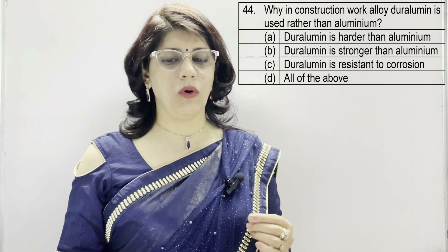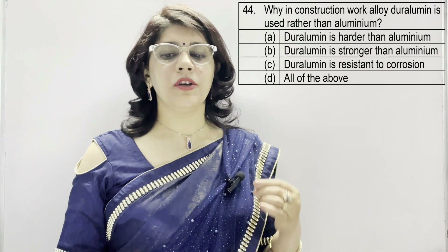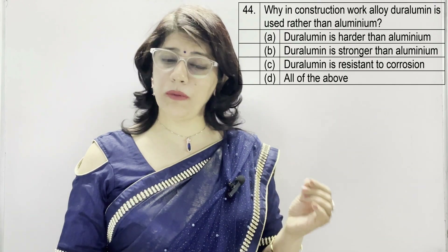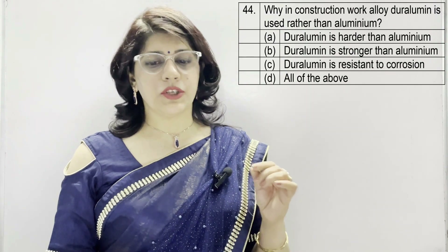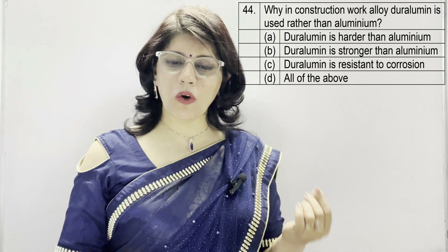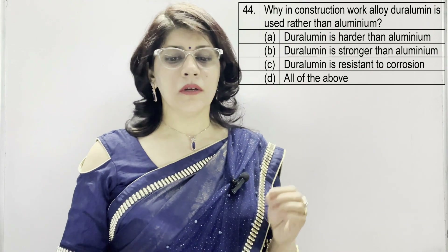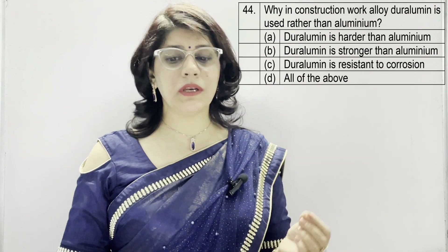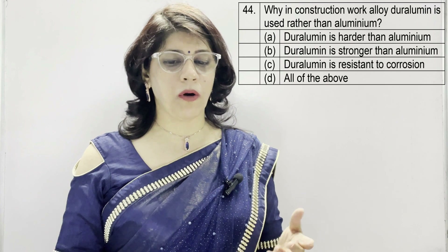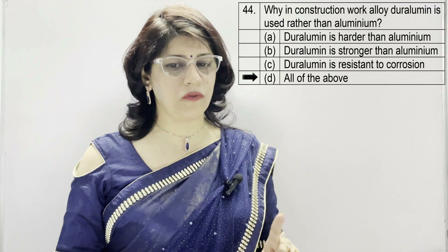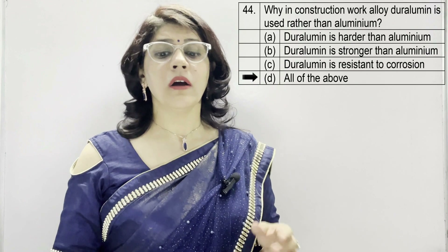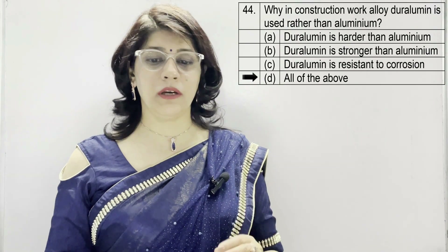In question number 44: why in construction work is duralumin used rather than aluminium? A: duralumin is harder than aluminium. B: duralumin is stronger than aluminium. C: duralumin is resistant to corrosion. D: all of the above. The correct option is D — all of the above — because duralumin is harder, stronger, and resistant to corrosion.